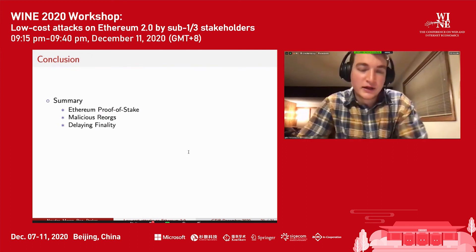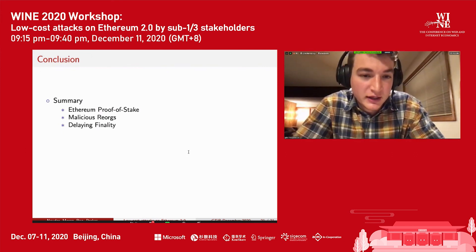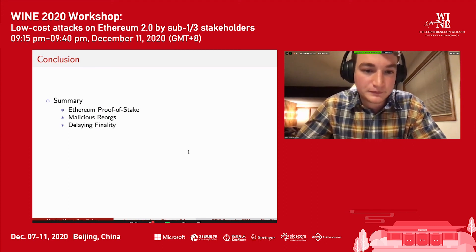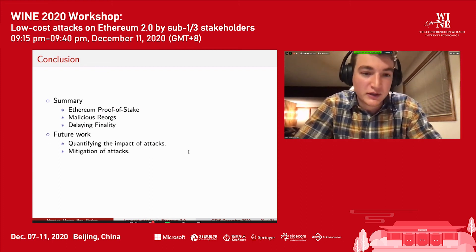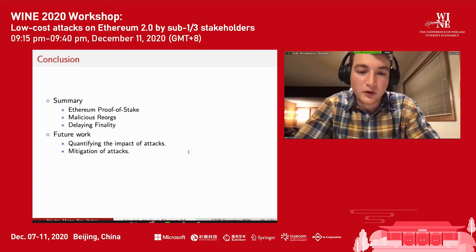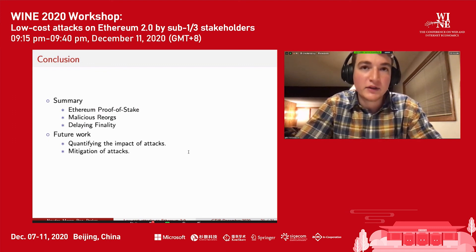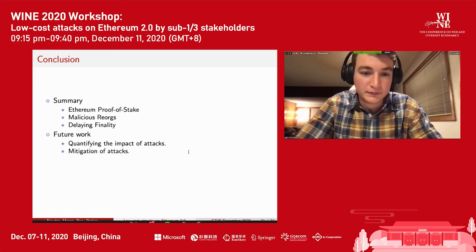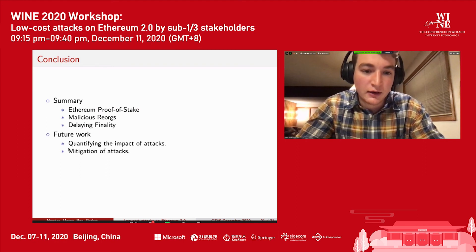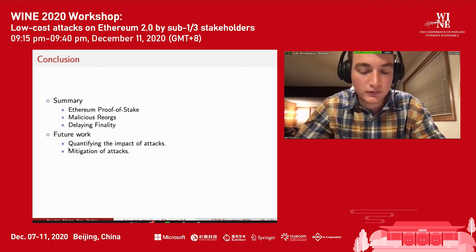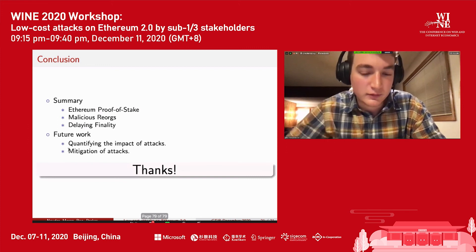In summary, I presented Ethereum proof of stake and two attacks: malicious reorgs and delaying finality. There's significant future work, including quantifying the impact of these attacks — specifically, how much an attacker playing the reorg strategy can expect to earn — and considering how to mitigate these attacks, which is also a very interesting line of future work. Thank you very much.